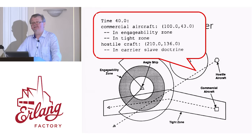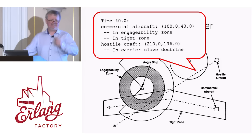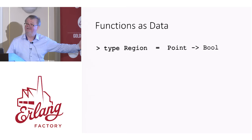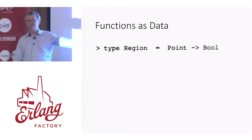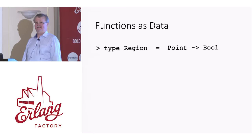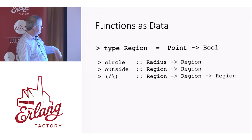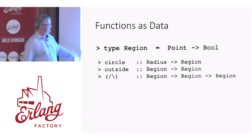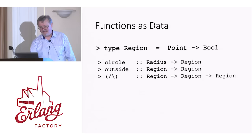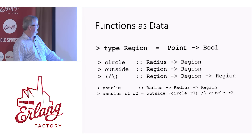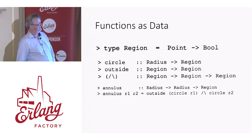Mark had the job of implementing this in Haskell. He needed to represent regions in the plane. How might you represent a region? As a function, of course. Mark chose to say that a region is going to be represented by a function from a point to a Boolean — the function returns true for points in the region and false for points outside. That's very simple. It makes it easy to define, for example, a circle — you take the points, compute how far they are from the origin, and compare that to the radius. It's easy to compute the outside of a region — just negate the Boolean. You can compute the intersection of a region — a point is in the intersection of P and Q if it's in P and in Q. And then you can build up things like an annulus — that is a ring — as the outside of a circle with radius R1 intersected with the inside of a circle with radius R2.